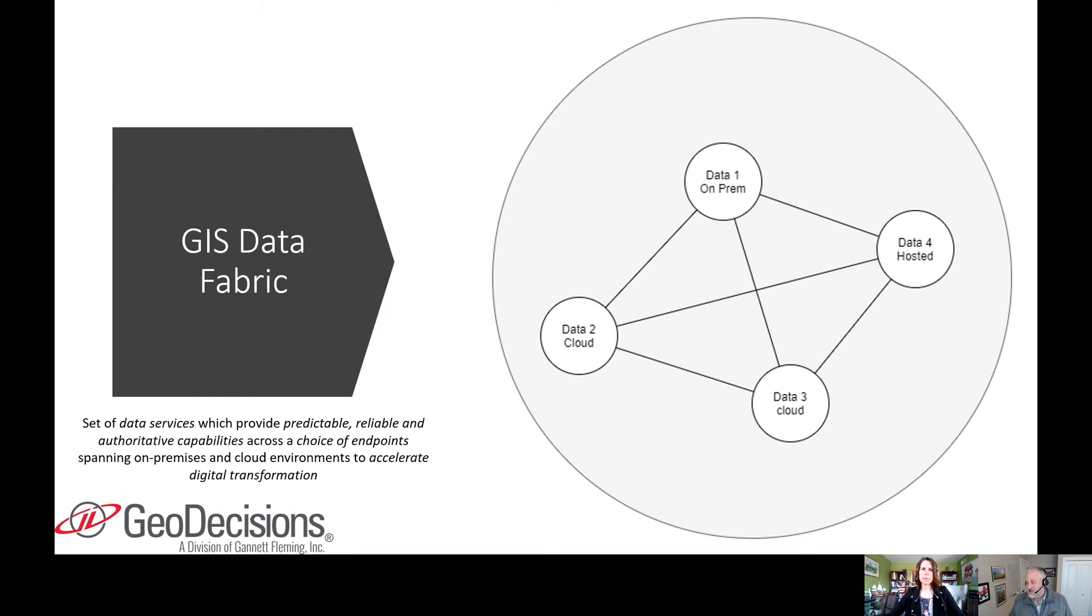There are different patterns that can be implemented. This is the high level of a GIS data fabric. These patterns have different technology standards and processes that can represent different business verticals. That's in a nutshell what a GIS data fabric is.